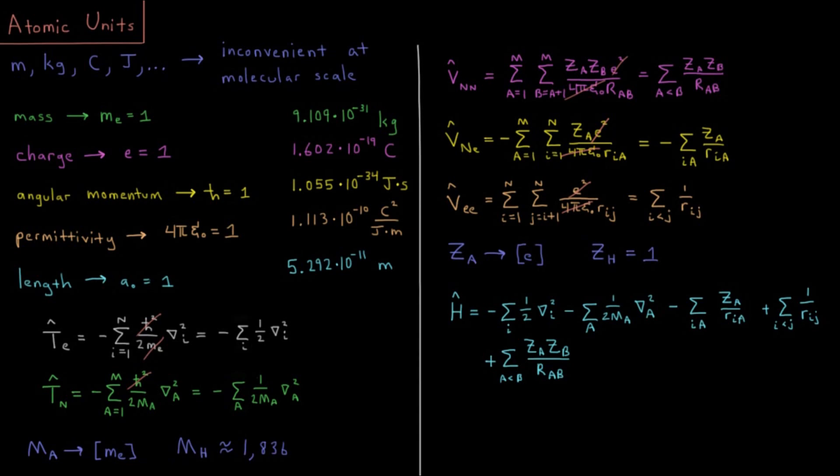Moving forward with the molecular Hamiltonian, we'll notice from the previous video that the Hamiltonian we had was pretty complicated, involved, has a lot of symbols, a lot of terms. So we'd like to do something which cuts down on the amount of stuff we have to write and remember in order to use that. And that's going to be what we're doing here with atomic units.